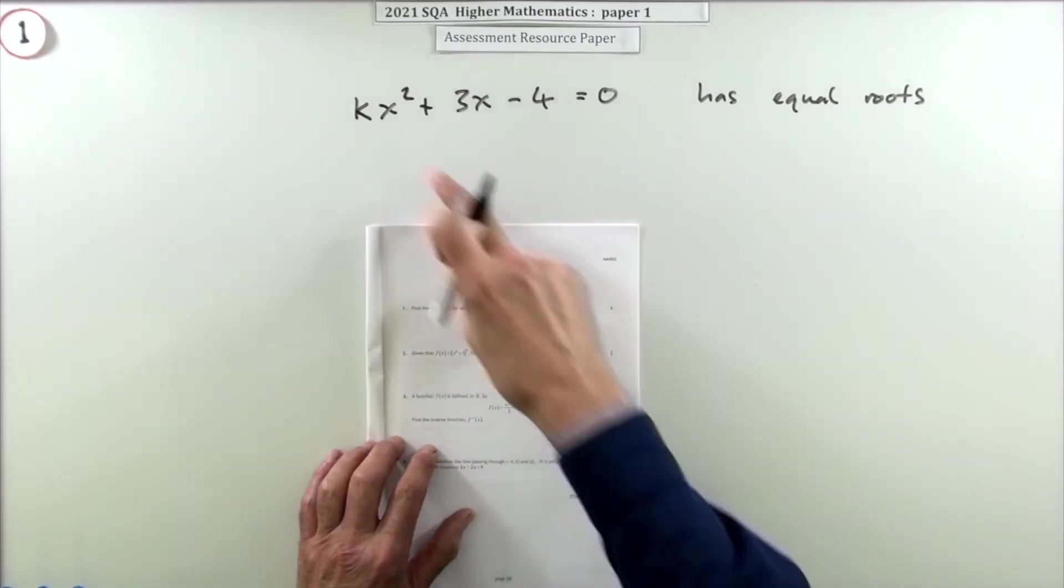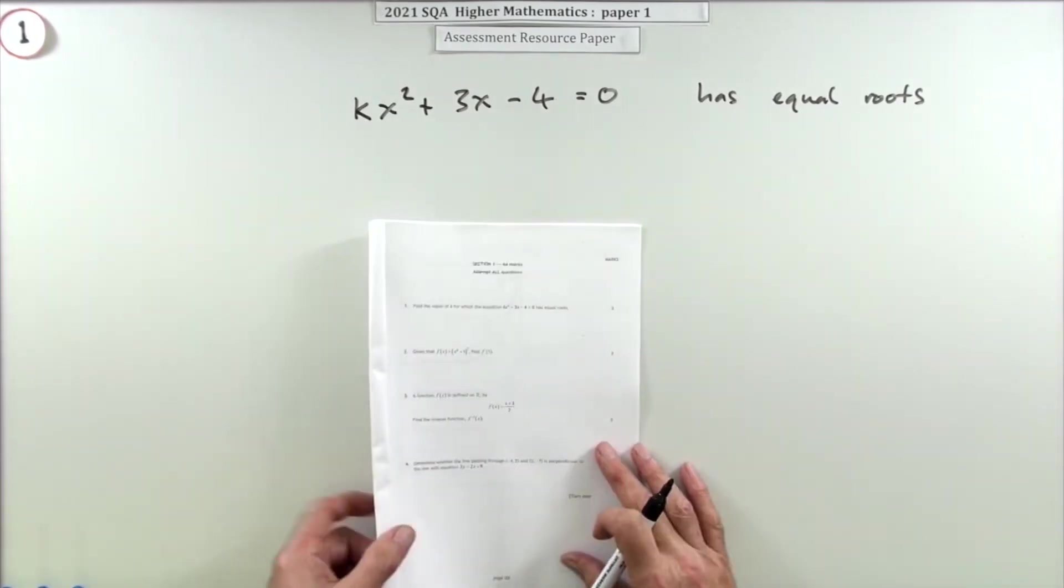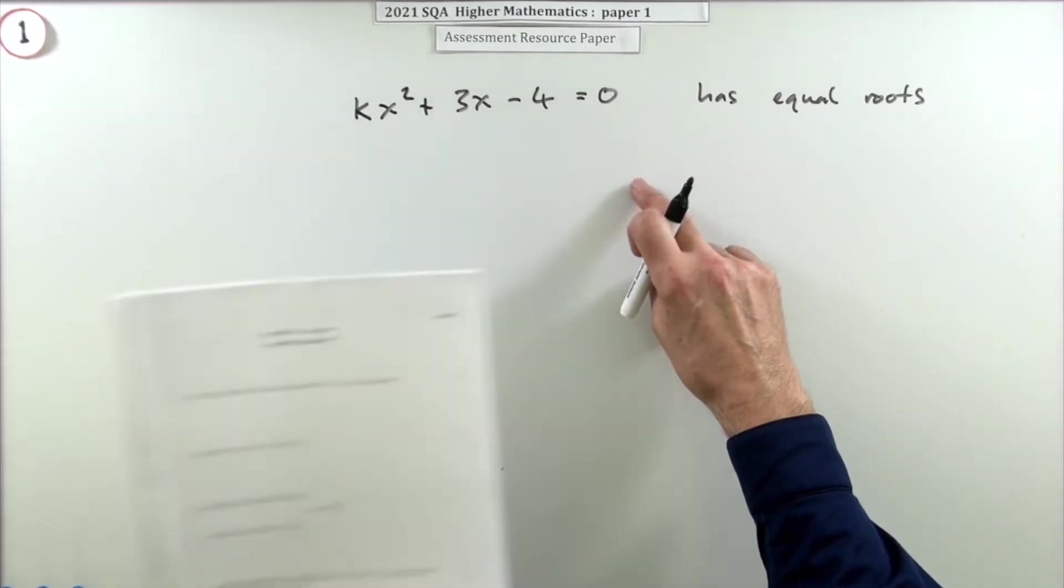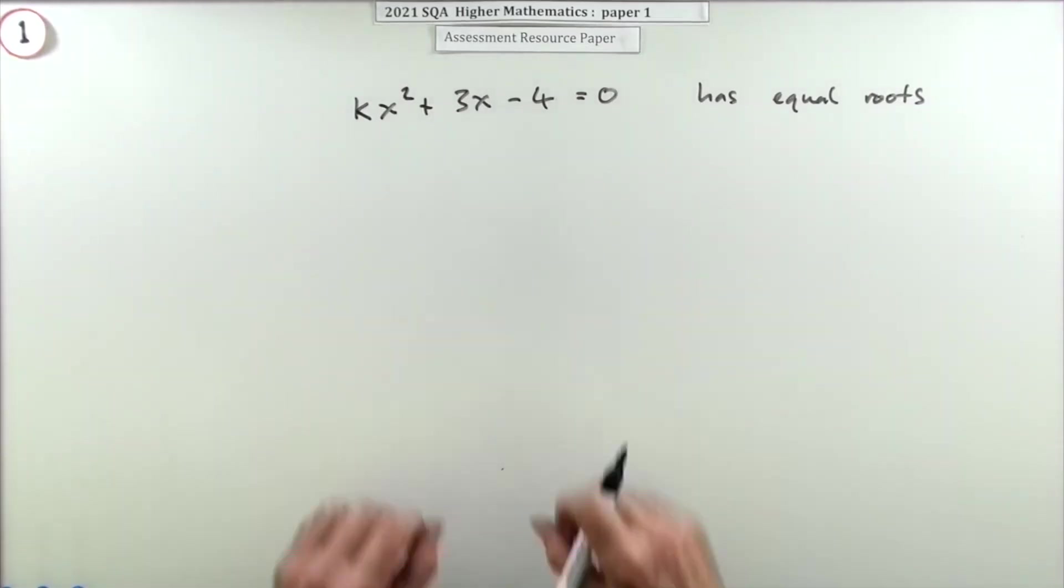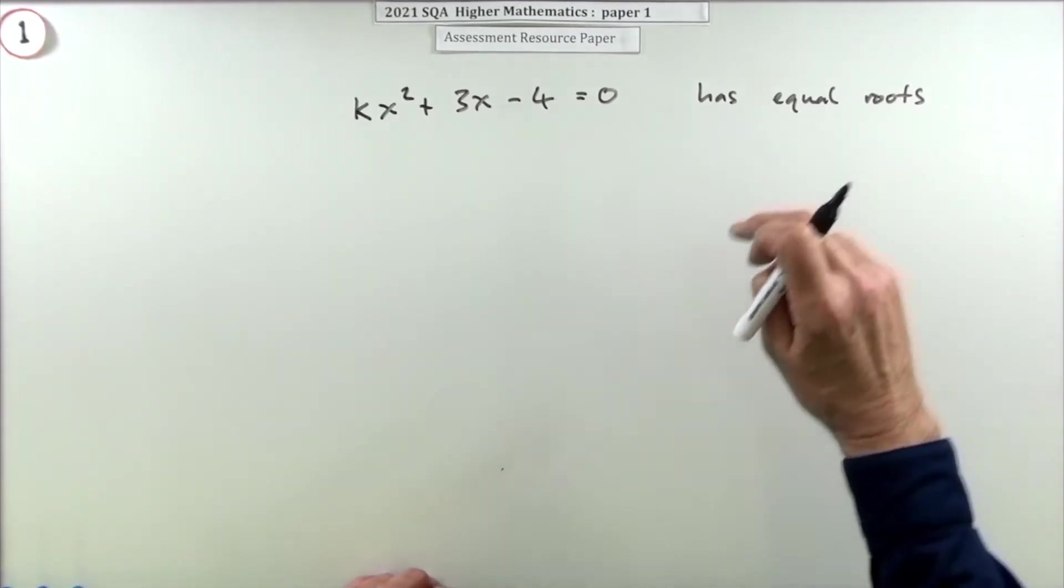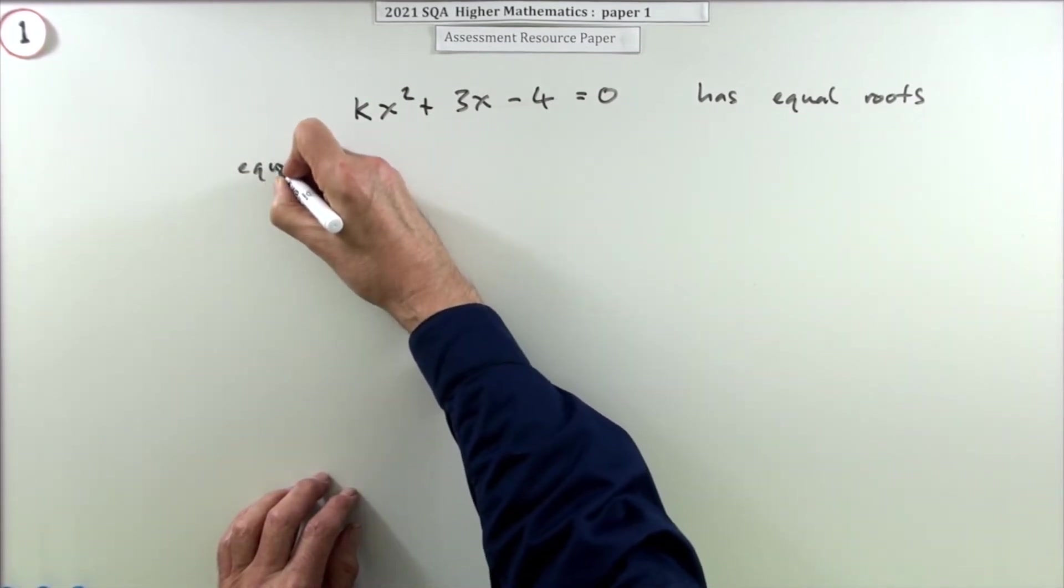So question one, three marks: Find the value of k for which this equation - this quadratic equation - has got equal roots. Well there straight away, quadratic equation, equal roots, it's the discriminant. The discriminant will determine whether or not it's got any roots and if so what type they are.